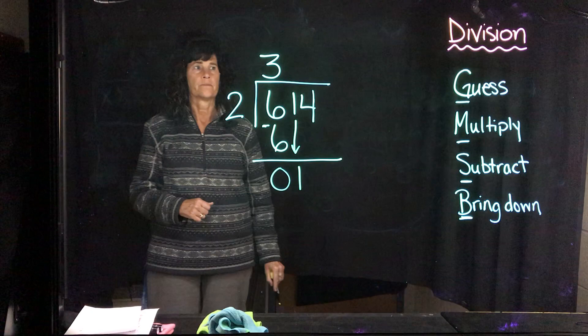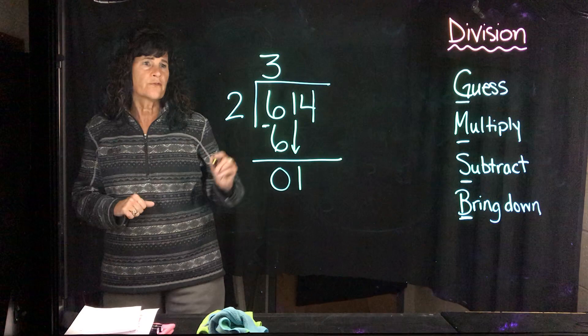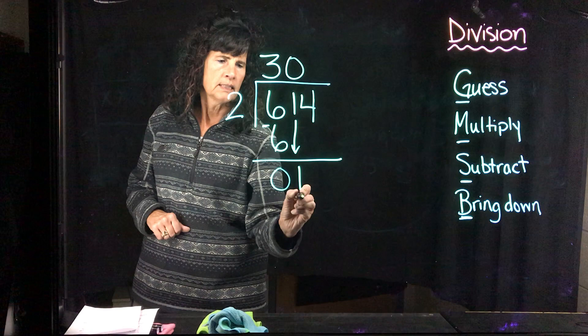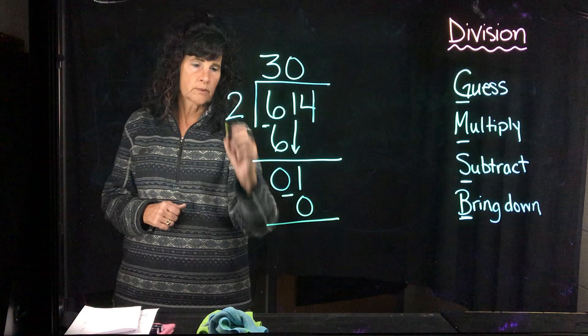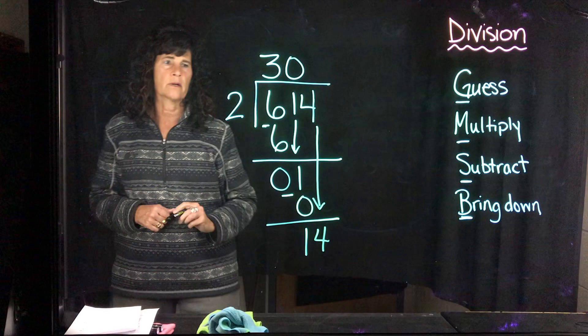So I'm going to bring down the 1 and I start over again. I'm going to guess how many twos fit into 1? None, right? 2 cannot fit into 1. So therefore, I'm going to put a 0 up here because no twos can fit into 1. Now I'm going to multiply. 0 times 2 is 0. Subtract. 1 minus 0 is 1. Bring down the next number, which is a 4. Now watch how my arrow comes all the way down here and I bring down my 4.